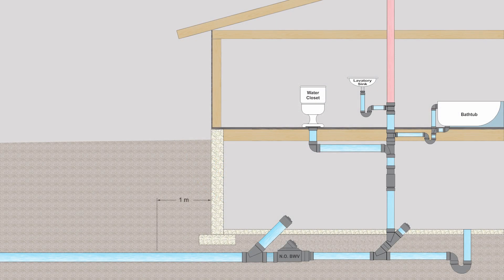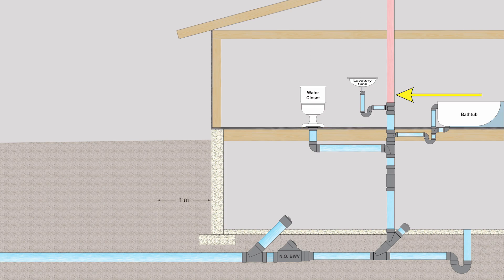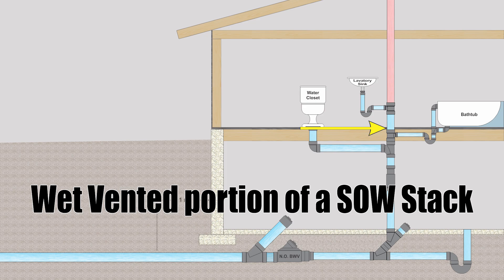In this next diagram we have a slightly different arrangement. We've got a lav sink, a bathtub, and a water closet, but they're tied into a soil waste stack. The lav sink has its own vent, but the bathtub and water closet will need to be wet vented through the soil waste stack. We call that a wet vented portion of a soil waste stack, from this point right down to the water closet trap arm connection.